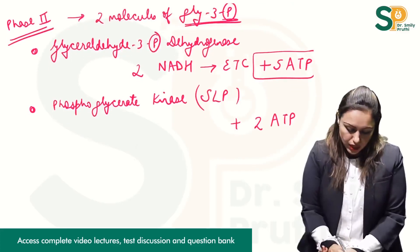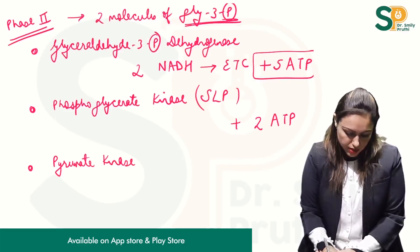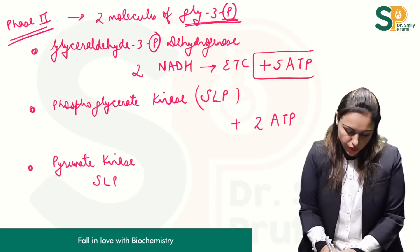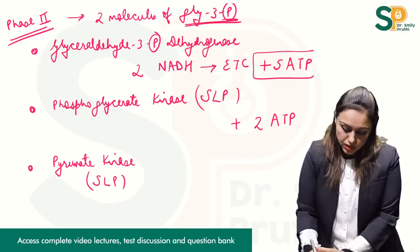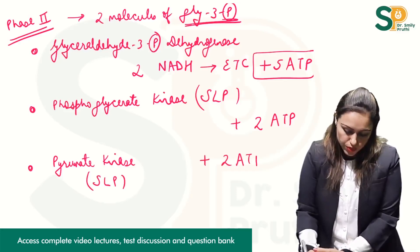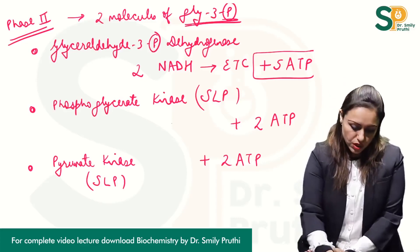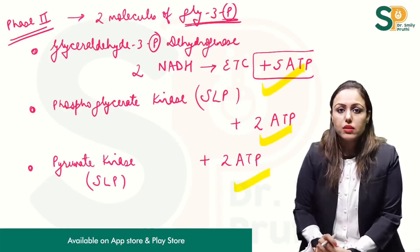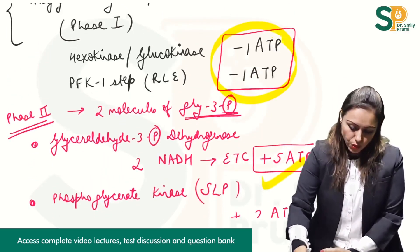Then the last step is catalyzed by the enzyme pyruvate kinase, which is also a substrate level phosphorylation step of glycolysis, and this step is also producing 2 ATPs. So let us do the total counting: plus 5 plus 2 plus 2, and this is 9 ATPs. Then 9 minus 2 ATPs.